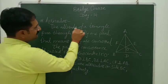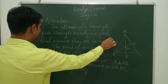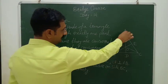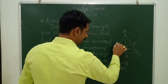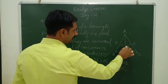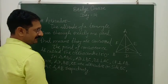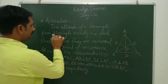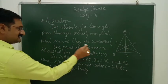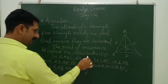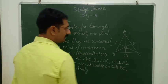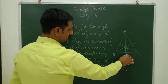The altitudes of a triangle pass through exactly one point — that means they are concurrent. The altitudes of a triangle pass through exactly one point, that is point O in the given figure. This concurrent point is called the orthocenter and it is denoted by O.